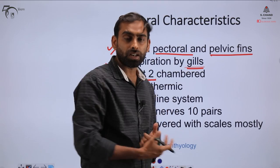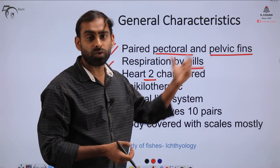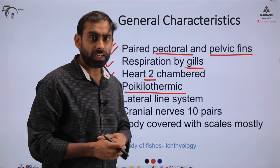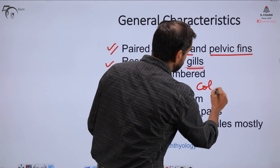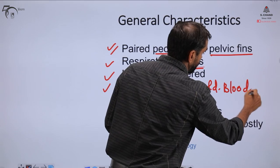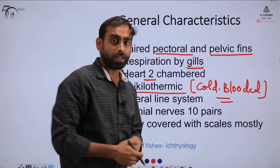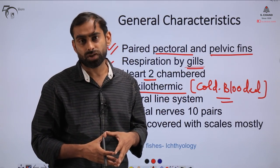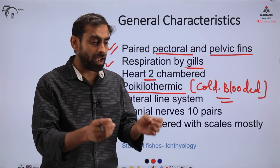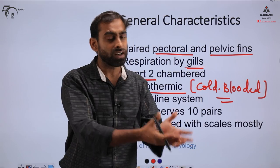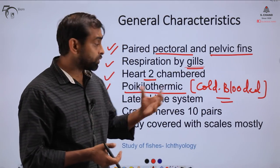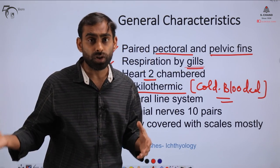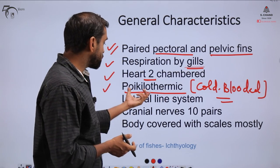Fish have a two-chambered heart and they are poikilothermic, meaning they are cold-blooded organisms. Only two classes of vertebrates are warm-blooded, which we will discuss later. Being cold-blooded means they are not able to maintain their own body temperature. If placed in a cold environment, the body temperature matches the external temperature. They need to move to warmer waters to warm up, or cooler waters if there is too much heat outside.